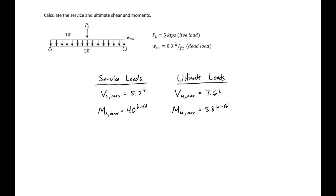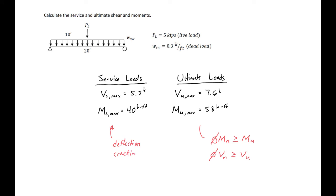To wrap it all up: our service loads cause a service shear of 5.5 kips and a service moment of 40 kip-feet. Our ultimate loads cause a maximum ultimate shear of 7.6 kips and a maximum ultimate moment of 58 kip-feet. We use the ultimate loads to design for φMn and φVn, and the service loads to check serviceability requirements such as deflection and cracking.